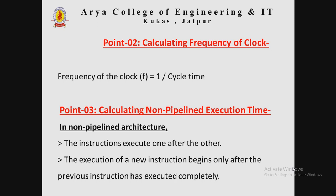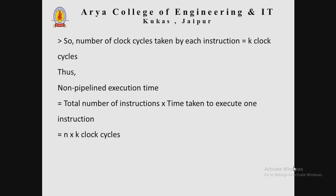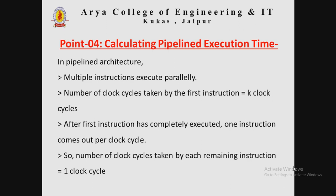The third step is calculating the non-pipelined execution time. In the non-pipelined architecture, instructions execute one after the other, and execution of a new instruction begins only after the previous instruction has completed. The number of clock cycles taken by each instruction equals K clock cycles. Thus, the non-pipelined execution time equals N × K clock cycles, where N is the total number of instructions.